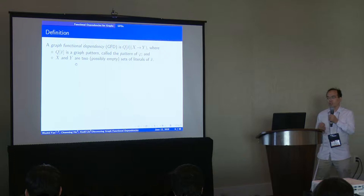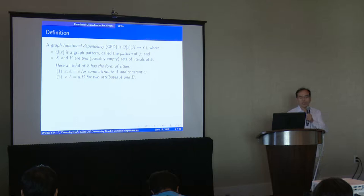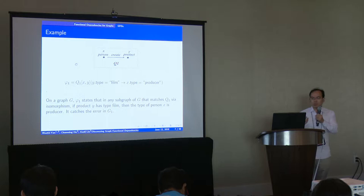A graph functional dependency consists of two parts. One part, Q, is the pattern, and functional dependency X implies Y. Here, X and Y are sets of literals of the following two forms: the A attribute X equals the B attribute Y.